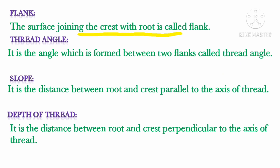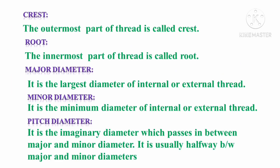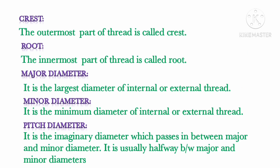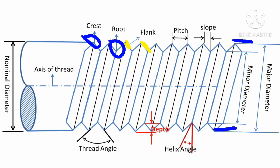Thread angle is the angle formed between the two flanks. The thread angle is that angle between the two flanks, where the flank is the surface which connects the root with the crest.